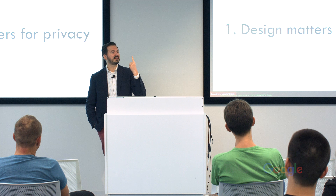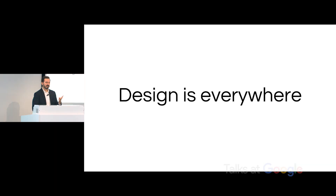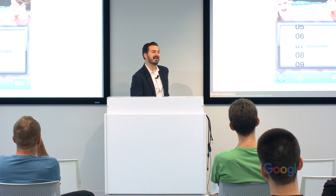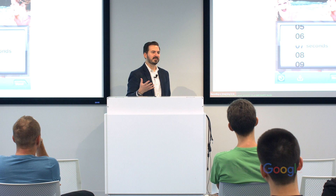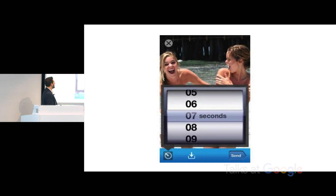Design matters for privacy because it is everywhere, because it is power, and because it is political. Many people might recognize this — it is a promo user interface, an early UI for the app Snapchat. If you had never seen this before, what would you think this user interface is designed to accomplish?